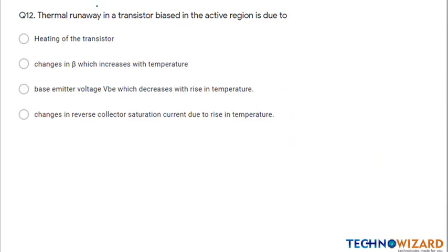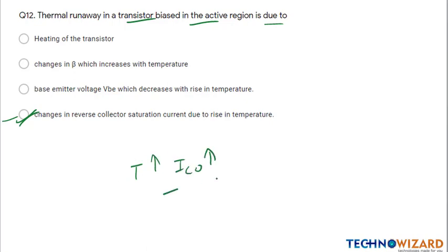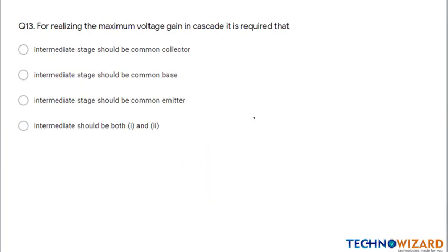Question number twelve: thermal runaway in a transistor biased in the active region is due to the change in the reverse collector saturation current due to the rise in temperature. As temperature increases, ICO — the leakage current — also increases, which is why thermal runaway occurs.